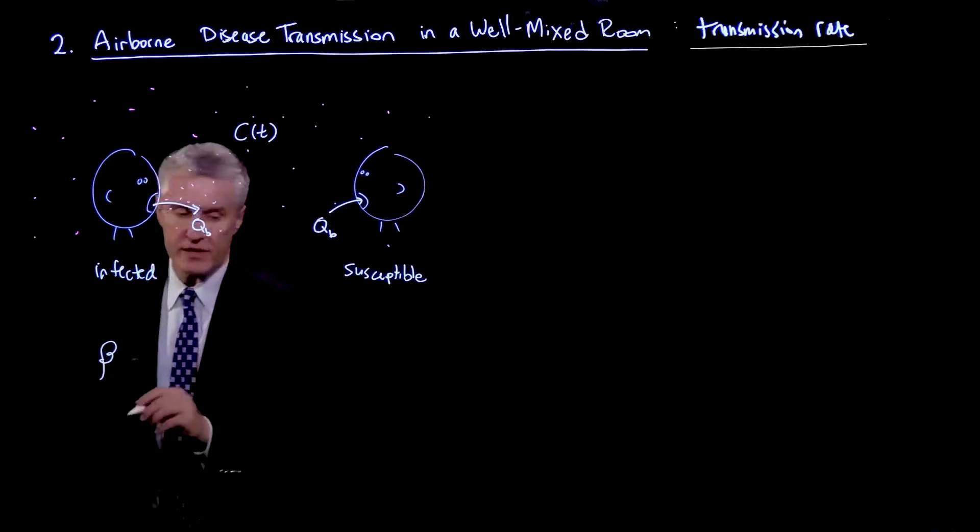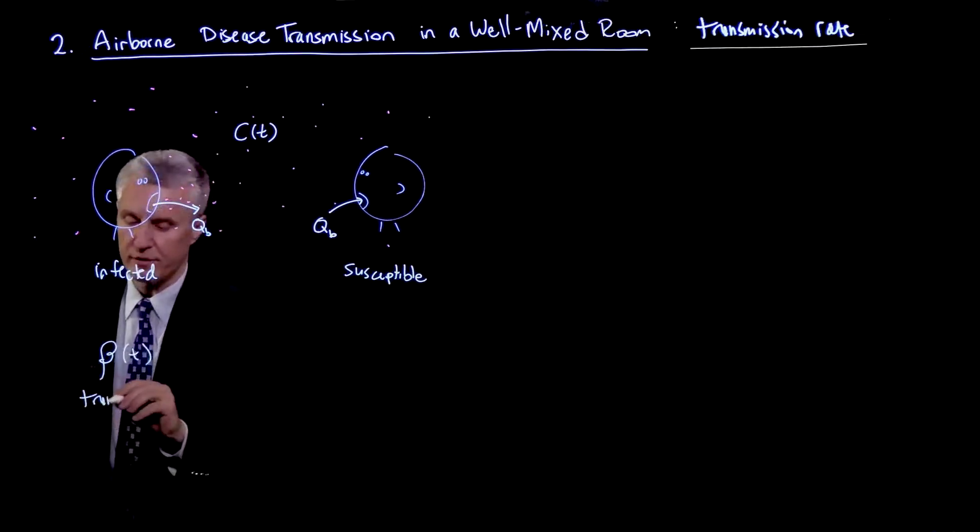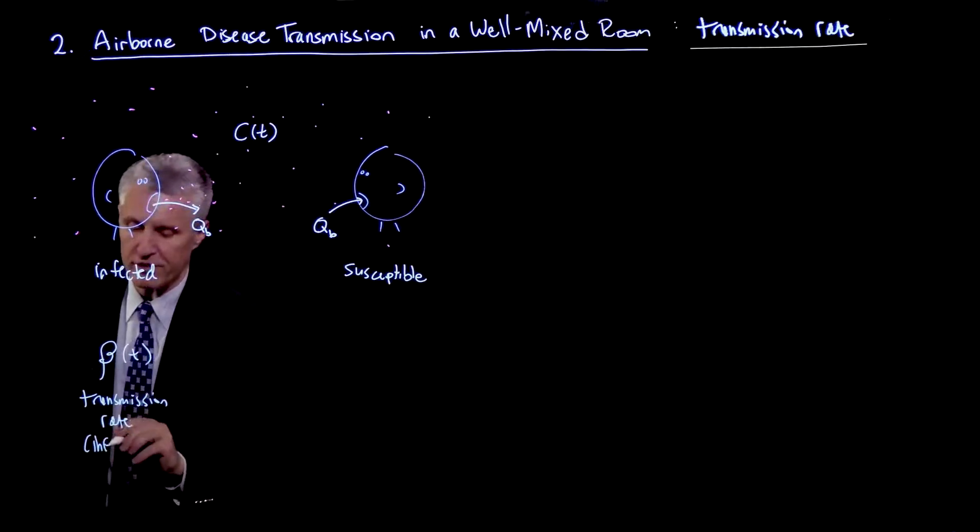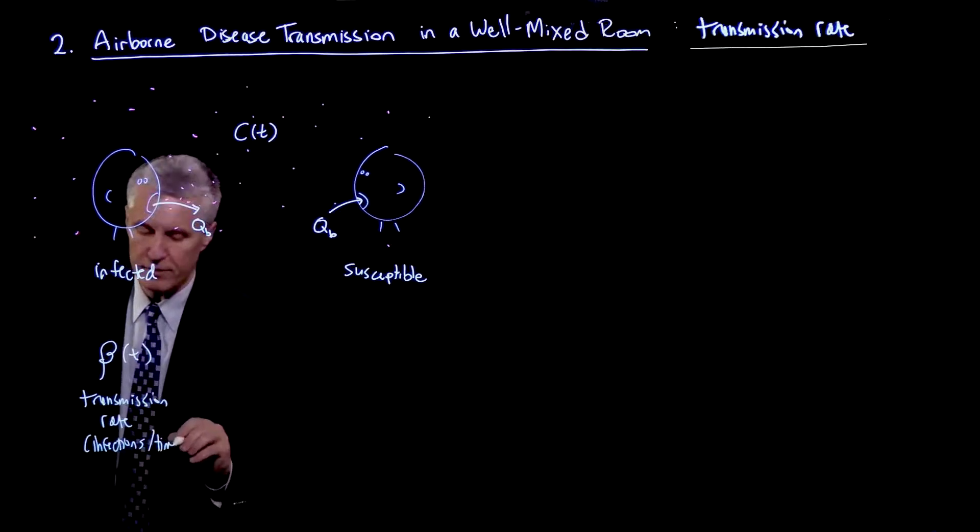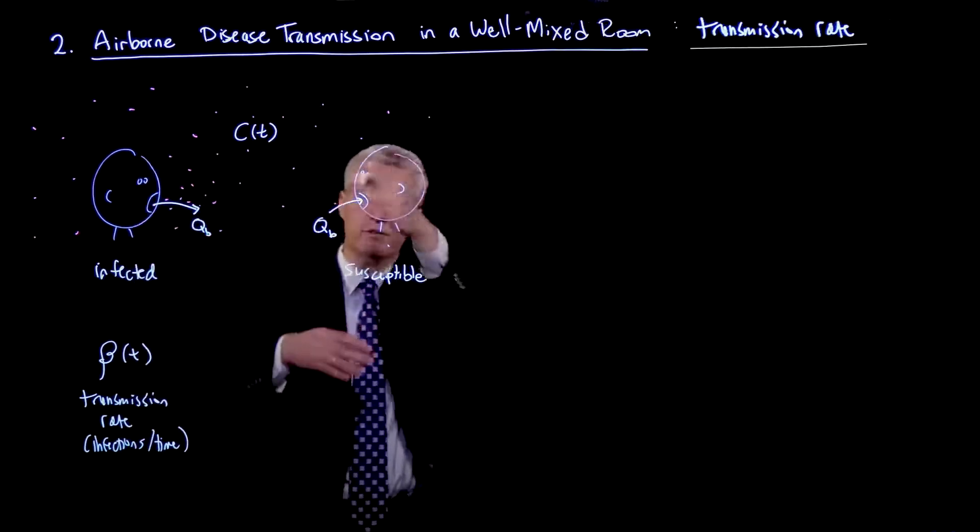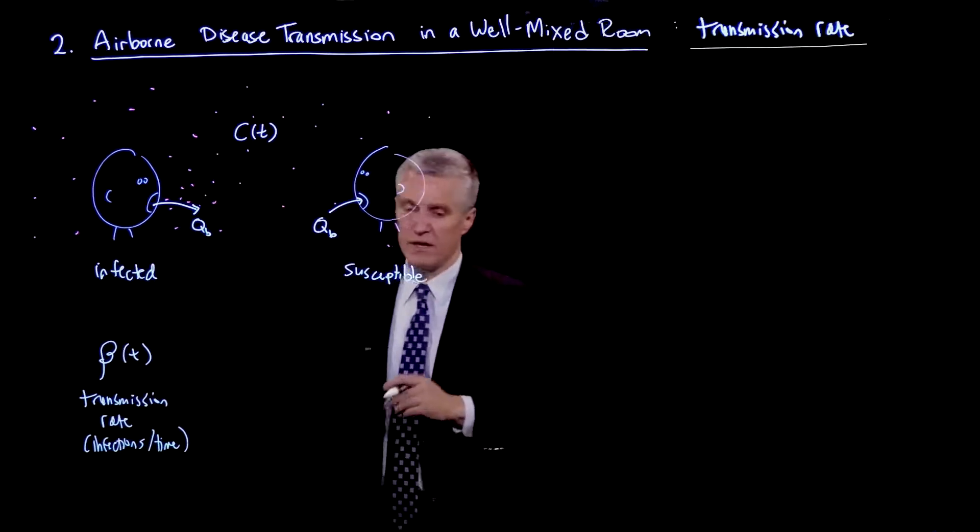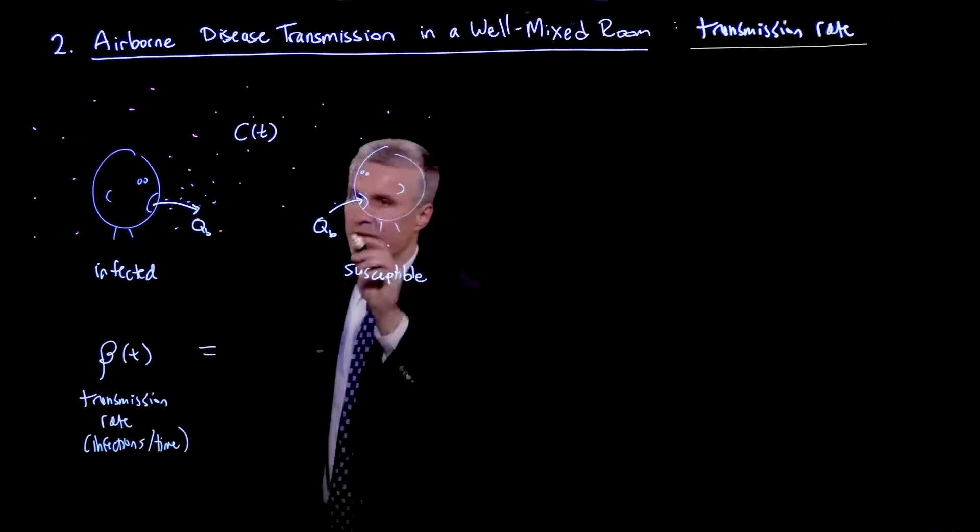So if we let beta be the transmission rate, it's the rate at which another person may become infected. Then how would we write this? Well, we could write it as, so we're now forgetting about the infected person.